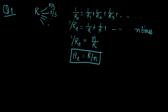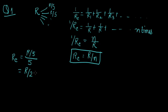In this question, resistance R is cut into 5 equal parts, so each part has resistance R/5. They are then connected in parallel. By this formula, their equivalent resistance will be R/N, where R here is R/5 and the number of resistances is 5. So equivalent resistance = (R/5)/5 = R/25. This is R'. The ratio R/R' = 25.